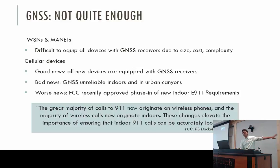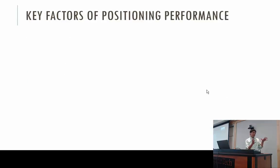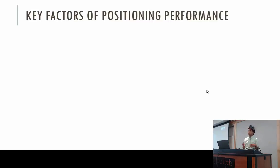The FCC approved a phase-in of new indoor E911 requirements. The E911 mandate specifies accuracy requirements that cellular network operators must meet in order to locate a mobile phone. When GPS is unreliable, we turn to network localization — specifically using the cellular base stations — and that's what we're talking about in this talk.